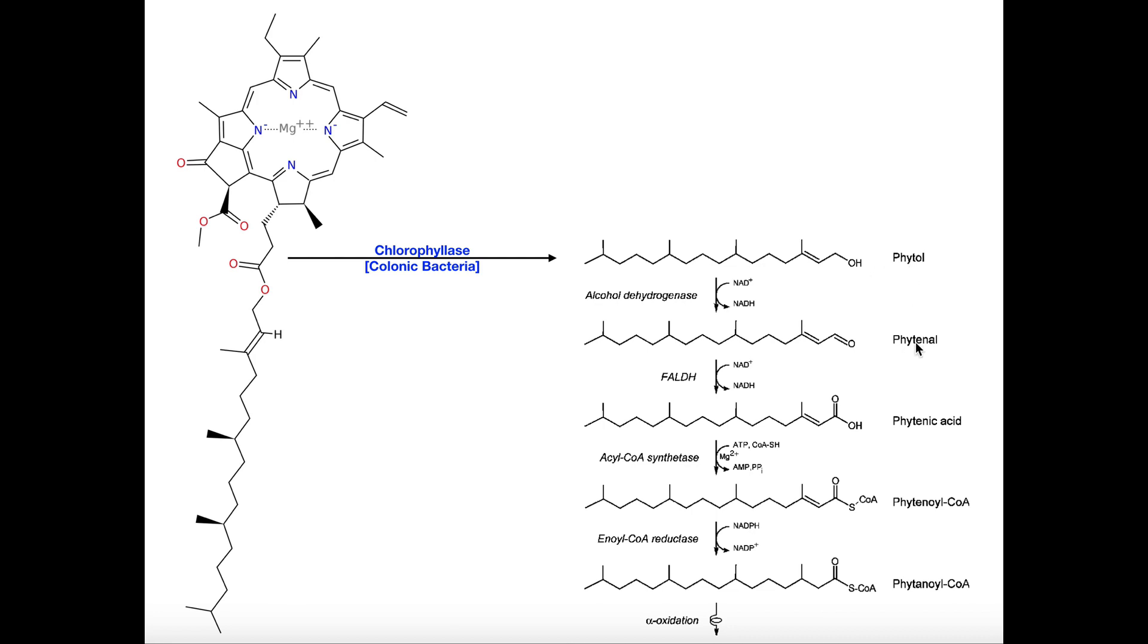So now that we've removed this phytol side chain, we have to ultimately attach a coenzyme A to it because that's how all fatty acid oxidation works generally. So phytol is oxidized to phytanal by an alcohol dehydrogenase. Notice the alcohol becomes an aldehyde. Then we have an FALDH. This is basically a long chain aldehyde dehydrogenase, which is going to oxidize this aldehyde into a carboxylic acid. This is phytanic acid. Then phytanic acid can be ligated to this coenzyme A through acyl-CoA synthetase. We saw this enzyme actually at the start of beta oxidation prior to the pathway.